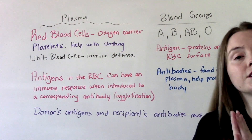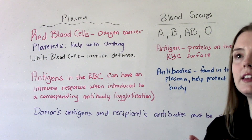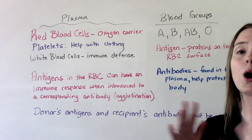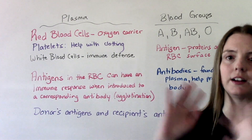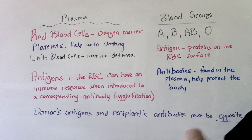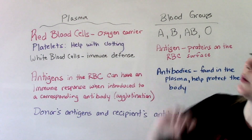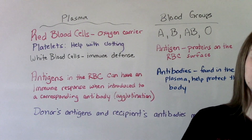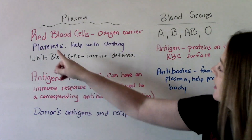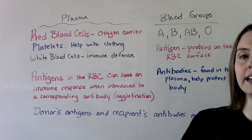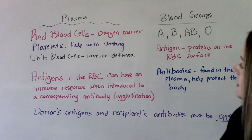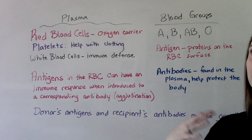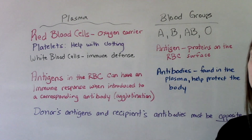In order to understand blood typing, we need to understand a lot of vocab and the different components of the blood, the plasma, etc. So what is in it? There's the red blood cells, which we know help us carry oxygen throughout our body, platelets, which help with clotting, and then our white blood cells are there to help our immune system fight out pathogens and keep us safe.